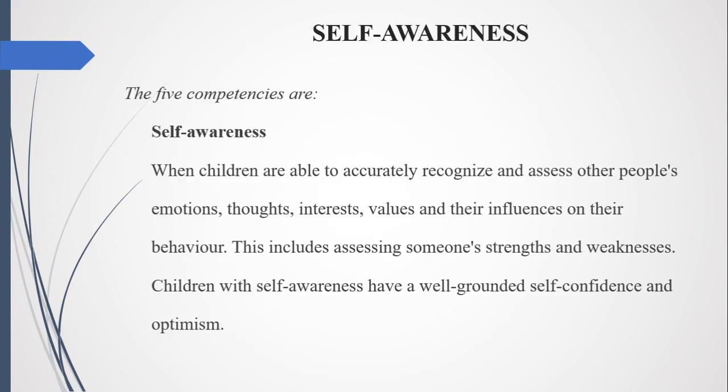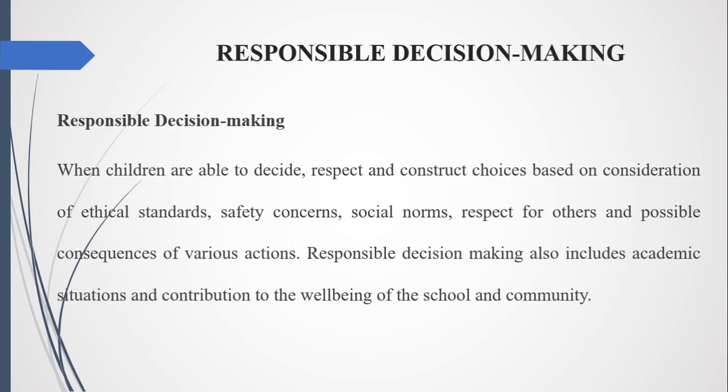Self-awareness: children are able to accurately recognize and assess other people's emotions, thoughts, interests, values and their influence on behavior. This includes assessing someone's strengths and weaknesses. Children with self-awareness have a well-grounded self-confidence and optimism. Responsible decision-making: children are able to decide and construct choices based on consideration of ethical standards, safety concerns, social norms, respect for others and possible consequences of various actions. This also includes academic situations and contribution to the well-being of the school and community.